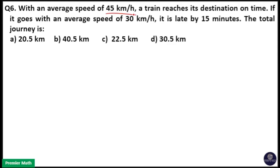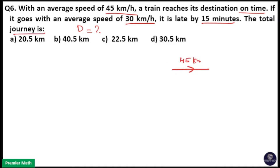With an average speed of 45 km per hour, a train reaches its destination on time. If it goes with an average speed of 30 km per hour, it is late by 15 minutes. We have to find the total journey distance. When the train travels at 45 km per hour it reaches on time, that is zero minutes late, but when it travels at 30 km per hour it is 15 minutes late.